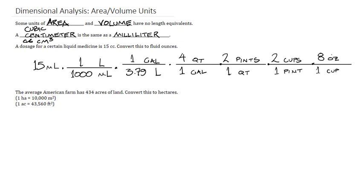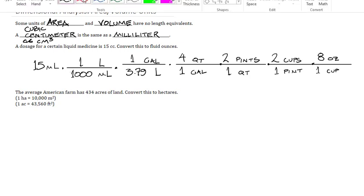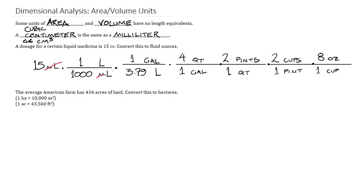These are all conversions that come off of a conversion sheet that you should have access to. And then from here on out, we just divide units out. Milliliters divide, liters divide, and so on. They should all be positioned oppositely because that will induce them to divide out. And then as we go, we can divide by 1,000, divide by 3.79, multiply by 4, multiply by 2, multiply by 2, multiply by 8. We get that our answer is about 0.5066 fluid ounces. So about half of a fluid ounce.